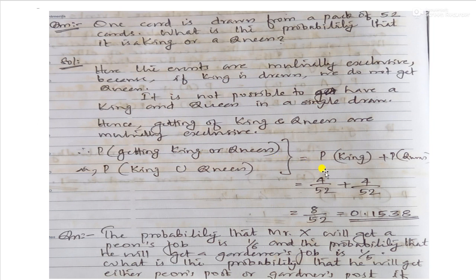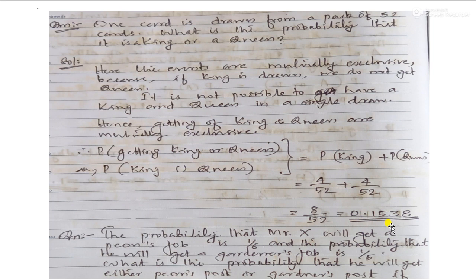The probability of getting a king or queen is equal to the probability of getting a king plus the probability of getting a queen. From a well-shuffled pack of cards, the probability of getting a king is 4 by 52 and the probability of getting a queen is 4 by 52. The total individual probability is 8 by 52, which equals 0.1538.